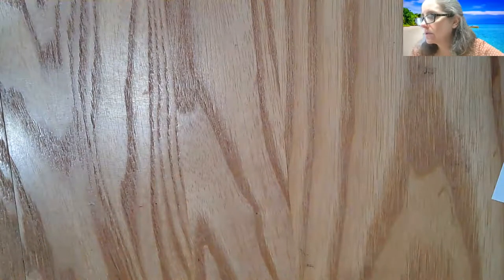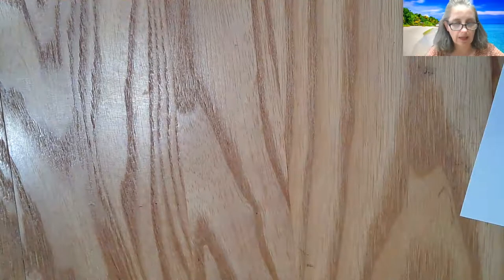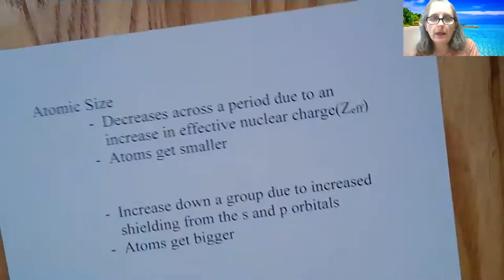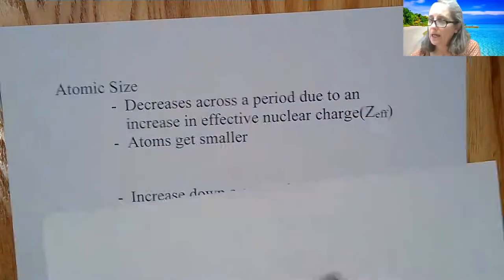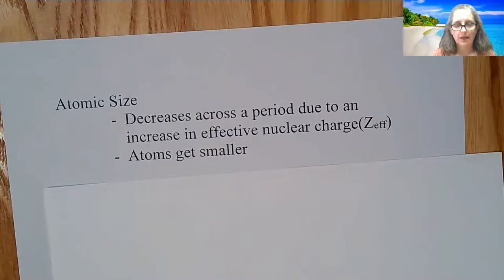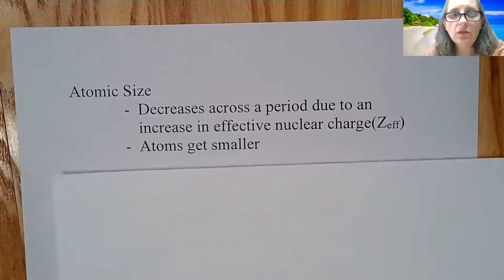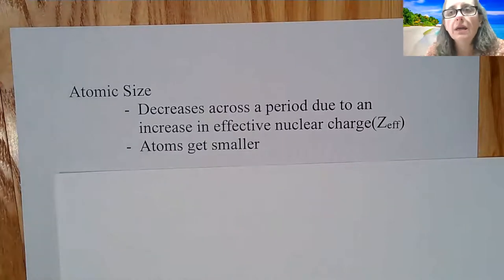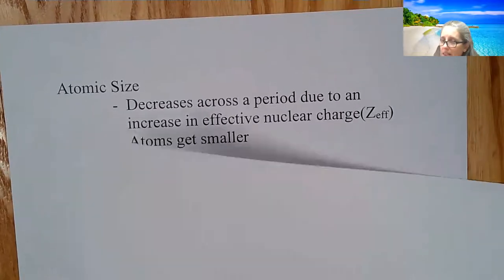So when we are talking about size of atoms, we can generally say, as you decrease across a period, excuse me, atomic size decreases as you go across the period, it is due to increase of effective nuclear charge. So the atoms get smaller.